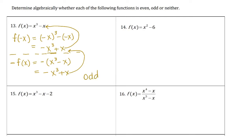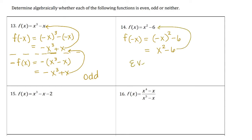For number 14, we again start by evaluating f(−x). We have (−x)² − 6, and when we simplify, we get positive x² − 6. That is the function we started with, so this function is even.